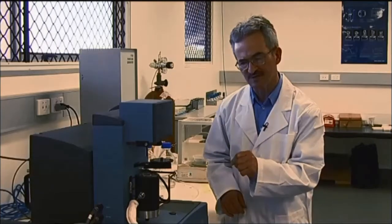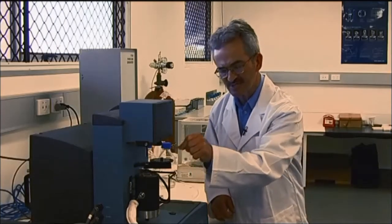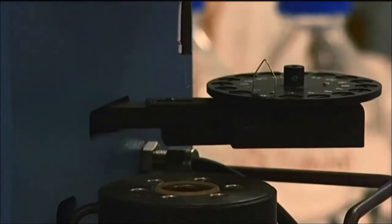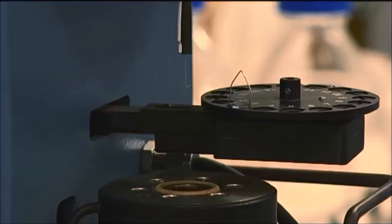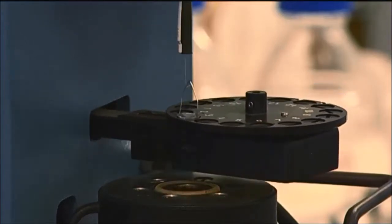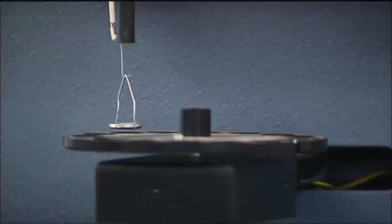We put a small sample between 20 to 30 milligrams inside the crucible. We load the sample inside the crucible and then load the crucible into the furnace of the TGA instrument.